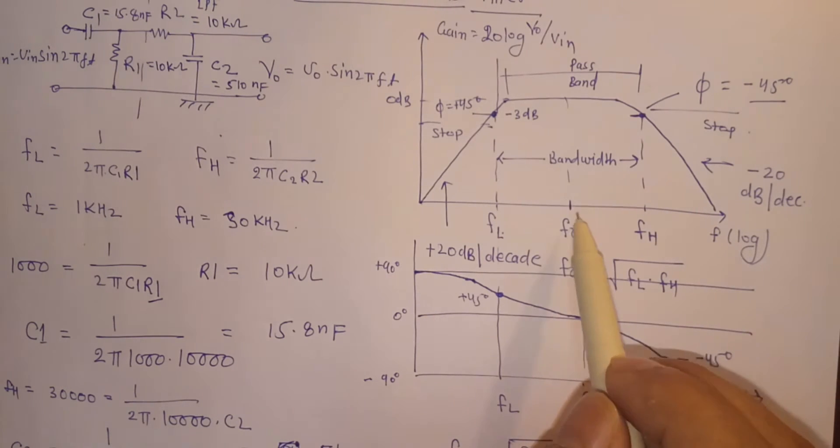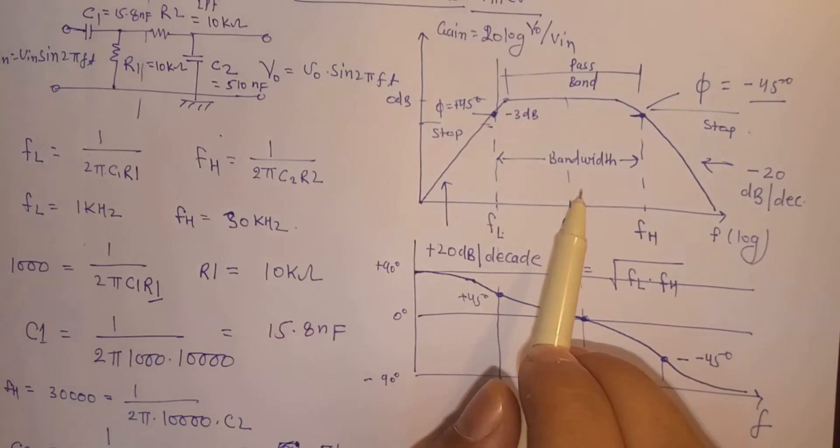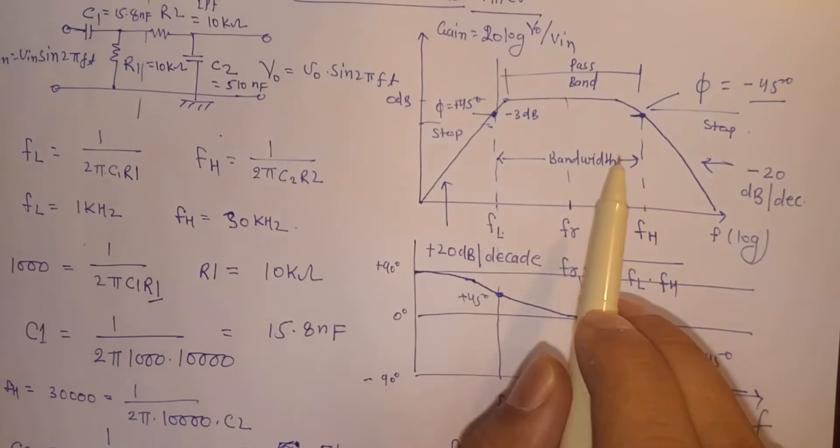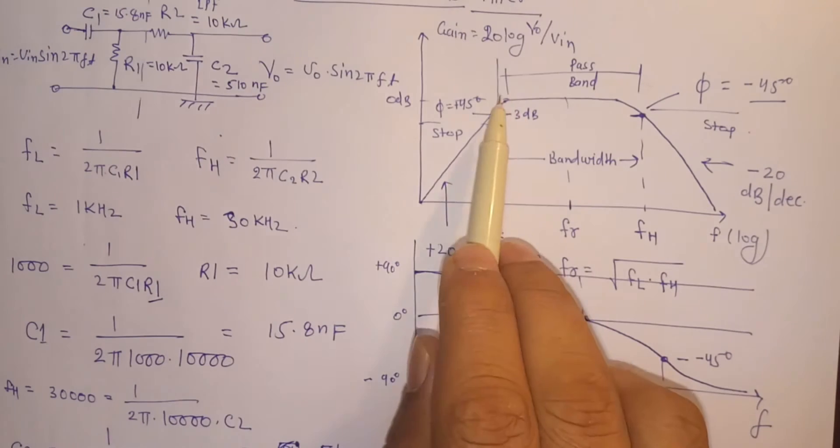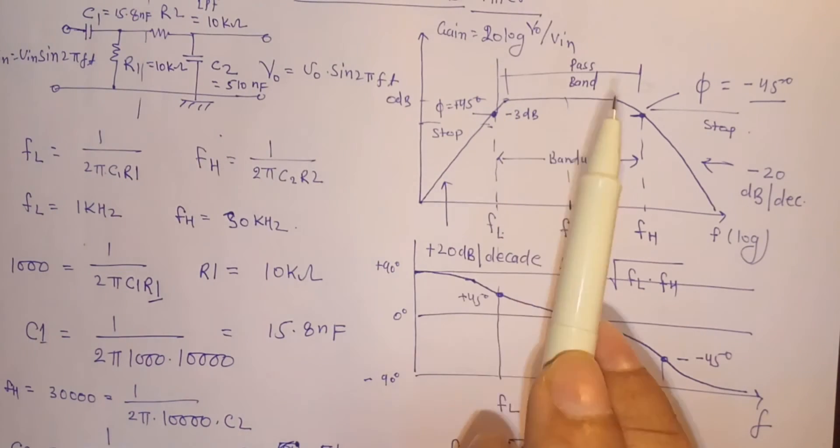The amplitude of the output signal from a bandpass filter, or any passive RC filter for that matter, will always be less than that of the input signal. This means the maximum gain is always 0dB.